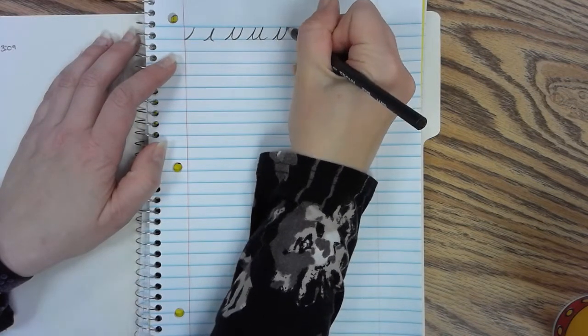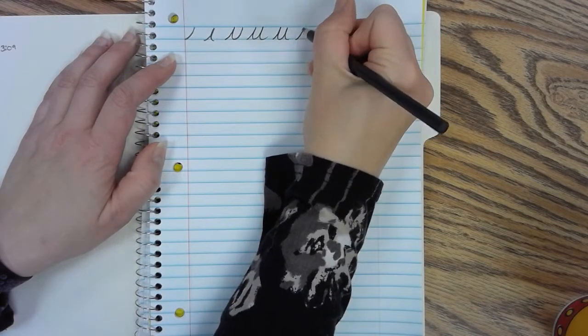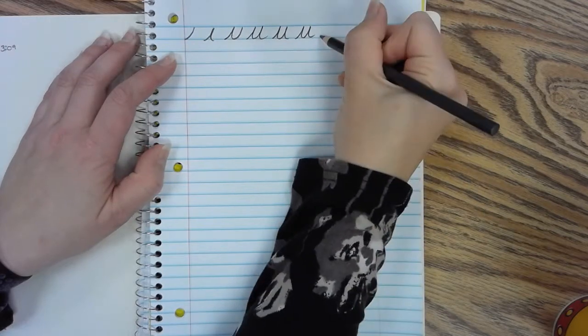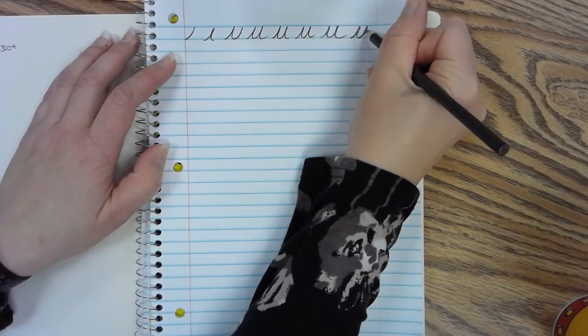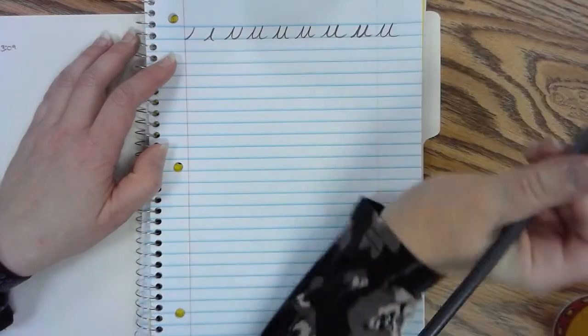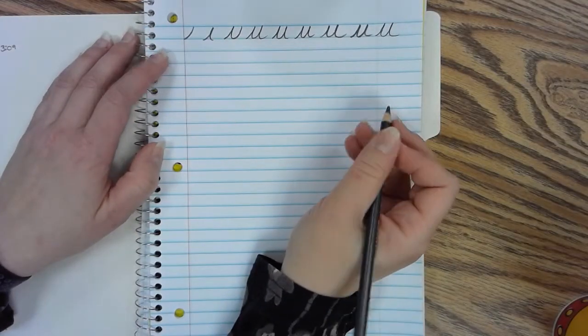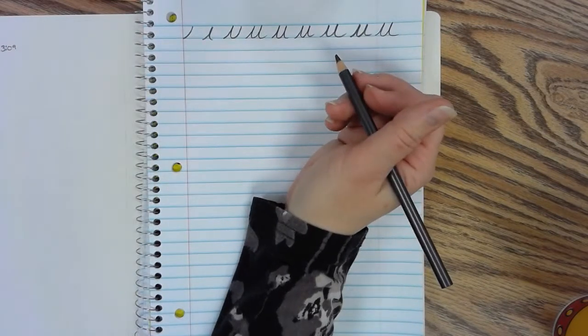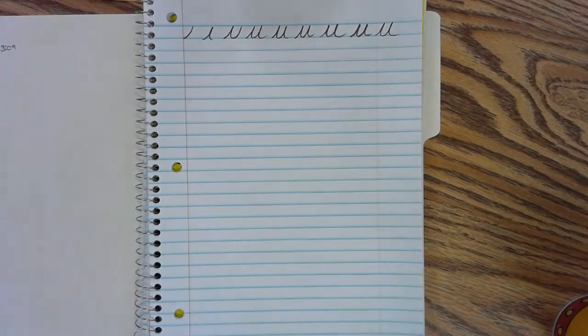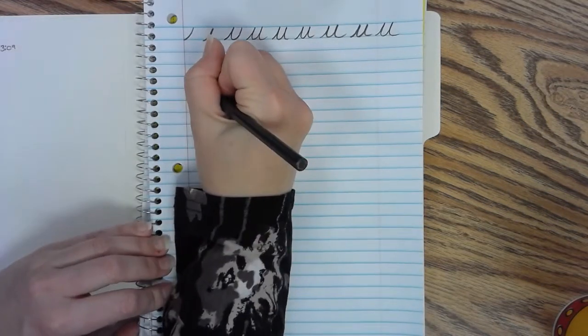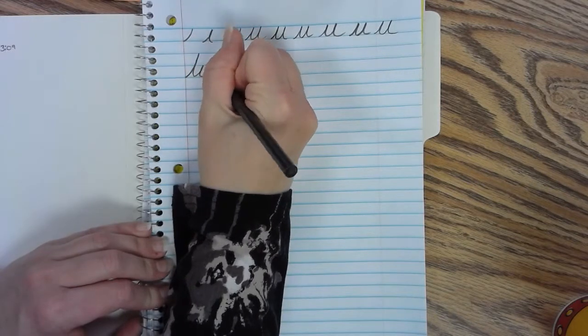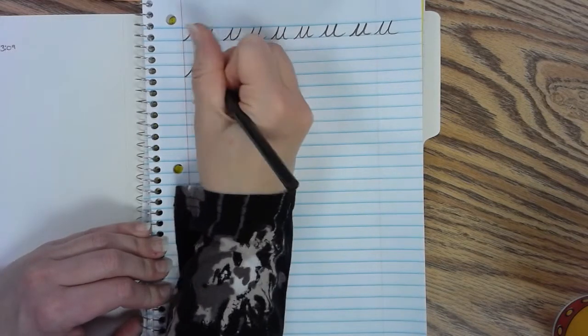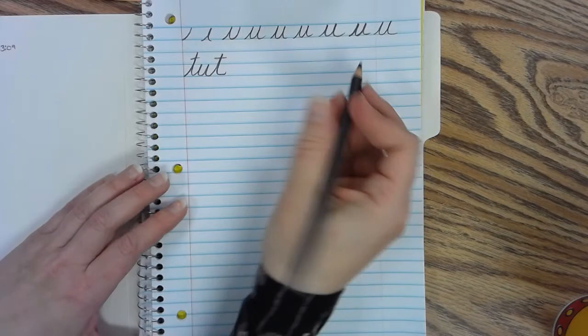So we'll do a line of u. All right, so now we'll see what words we can come up with today. So tut, using King Tut. And again I'll just write the words and you can pick which ones you want.